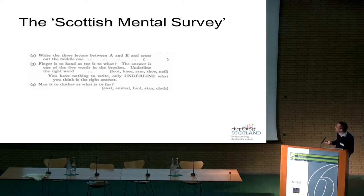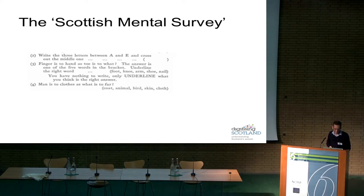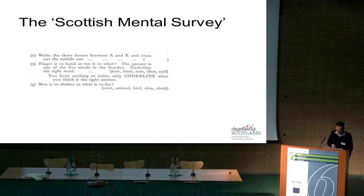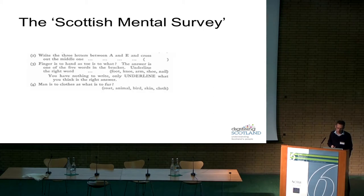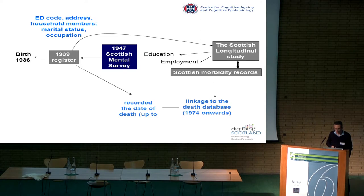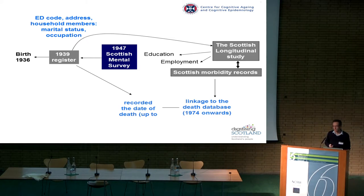The second dataset is a project transcribing and making research-ready the Scottish Civil Registration data — information on births, deaths, and marriages in Scotland. The Scottish Mental Survey is a cognitive ability test with questions like: 'Man is to close as what is for: fur coat, animal, bird, skin, cloth?' — a fairly standard IQ-type test asked of all 11-year-old children in Scotland in 1932 and 1947. What we've done is link these data with a set of administrative data and then link forward to the Scottish Longitudinal Study.